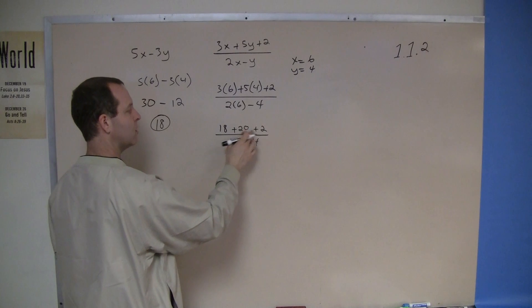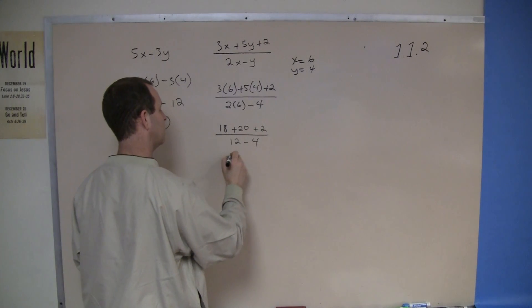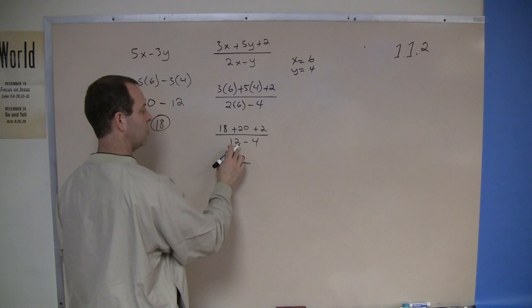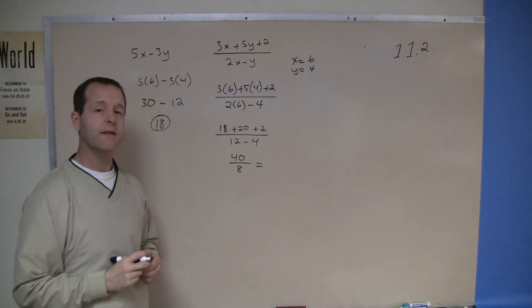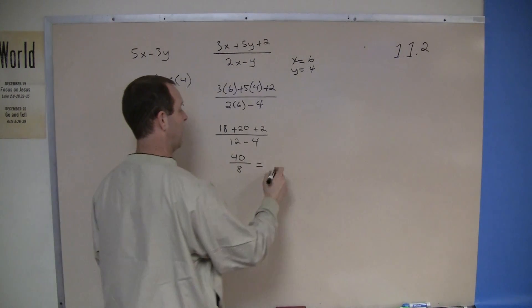18 plus 20 plus 2 is 40. 12 minus 4 is an 8, and then 40 divided by 8 reduces down to 5.